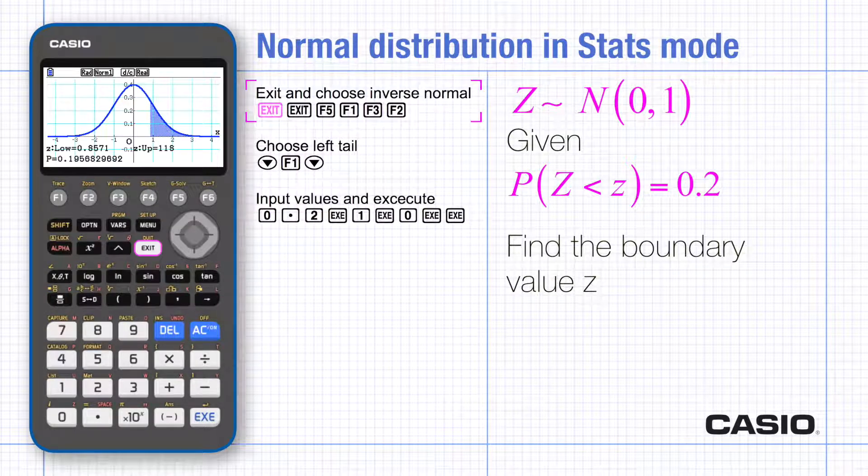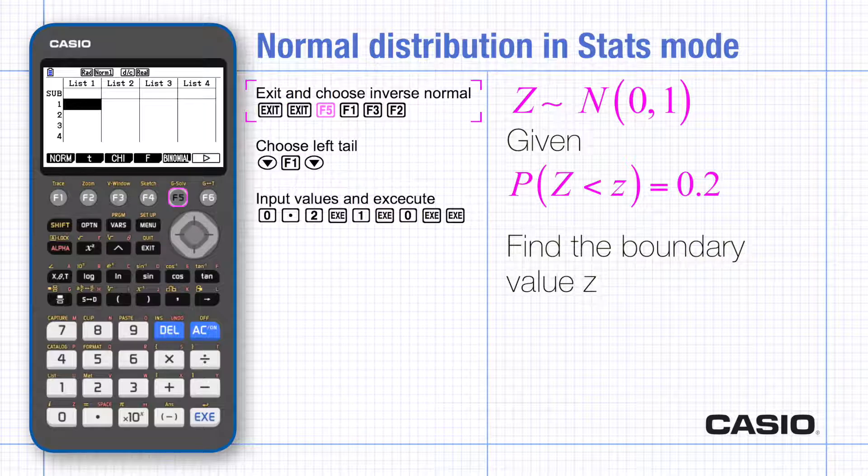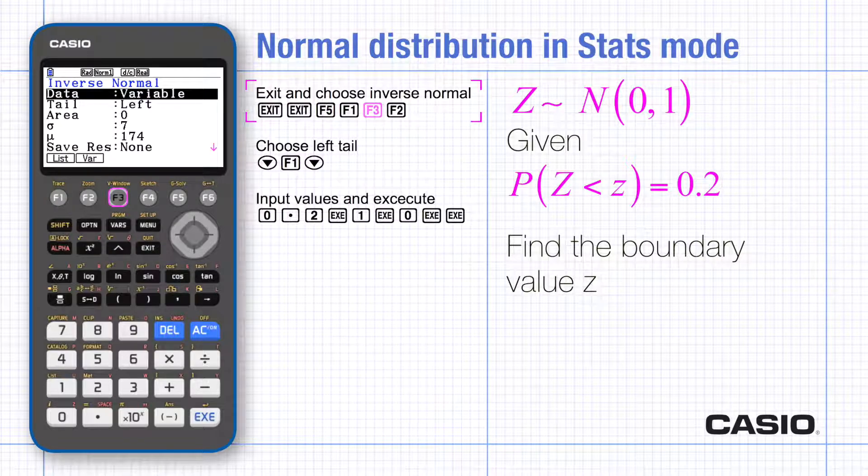Exit and choose distribution, normal and the inverse function and set to variable. Choose the left tail.